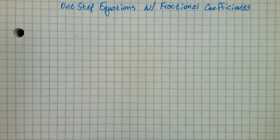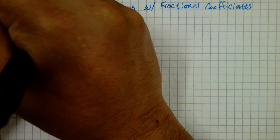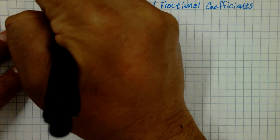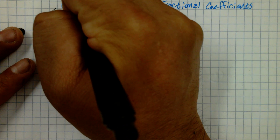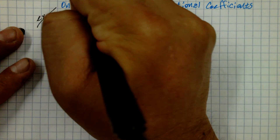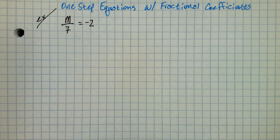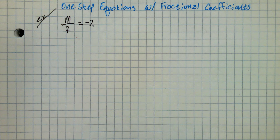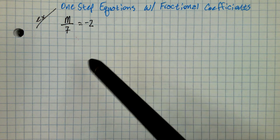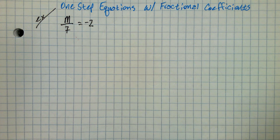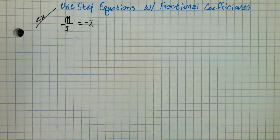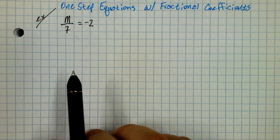I want to give you something we practiced on Tuesday to begin with. So let's take an equation: m divided by 7 equals negative 2. This is a division equation. How can I tell it's division? I look at my variable — it's divided by 7, and it equals negative 2. So maybe you can even figure it out in your head, but we want to go through the process because I'm going to show you how this is going to help us build on the new thing.